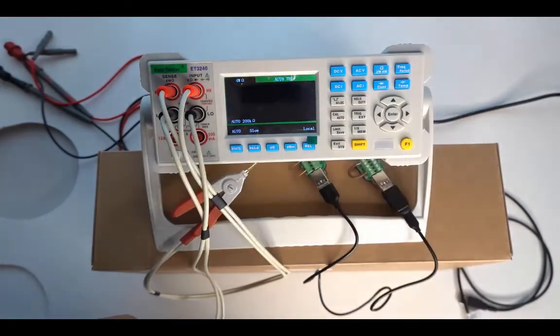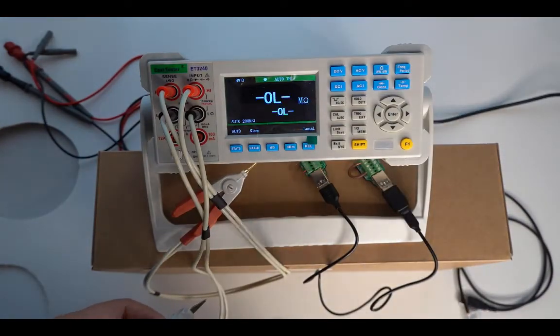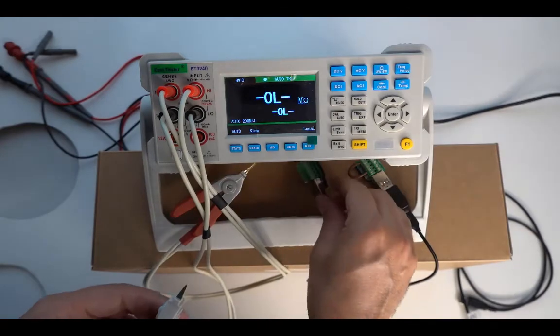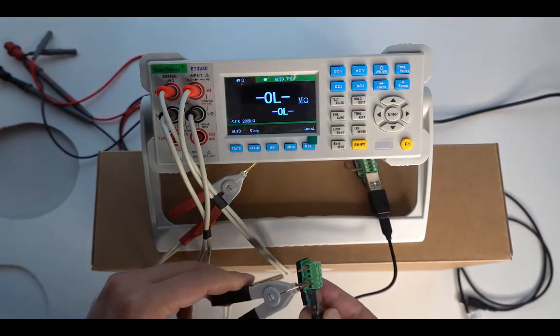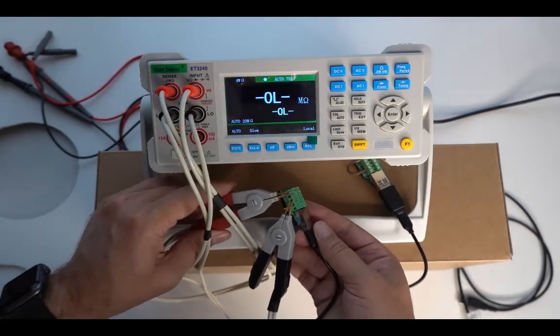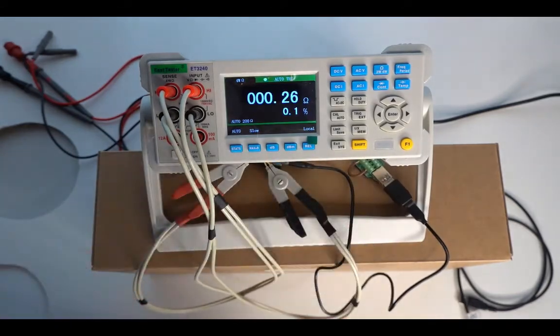And I have to put my ohm meter here in four-wire measurement, and then I just connect like this. And now you have a resistance that's a bit lower, 0.28.